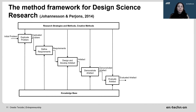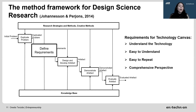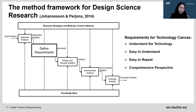We have defined the requirements. For example, the requirements for the first evaluation round of the technology canvas are: it needs to support practitioners in understanding the technology better, it needs to be easy to understand, easy to repeat, and offer a comprehensive perspective. We have designed and developed the artifact — the technology canvas — and are able to demonstrate it through the seminars we conduct at KIT. The first round of evaluation is already over, and our goal is to systematically evaluate it until no further changes are needed.